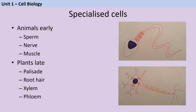Cells can be specialised, meaning they're adapted structurally to suit their function — this could involve a change in shape or the presence of more or fewer subcellular structures. A sperm cell has a tail to help it move and is packed with mitochondria to release the energy needed to reach the egg. A nerve cell has a very branched shape, allowing one neuron to communicate with hundreds of others. Muscle cells are packed with mitochondria for energy and ribosomes for synthesising protein. In animals, this specialisation happens very early in development, whereas plant cells specialise much later, and plants retain unspecialised meristem cells throughout their lifetime.